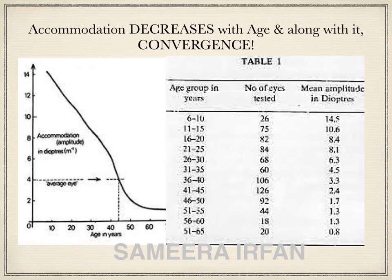Therefore, eyes develop a natural tendency to deviate outwards starting in the mid-teens. These patients develop symptoms of eye strain as they are mainly doing near work with one eye while the other is deviated outwards. This exotropia starting in the mid-teens or twenties can be easily managed by doing convergence exercises and removing the plus or hypermetropic glasses from such patients.